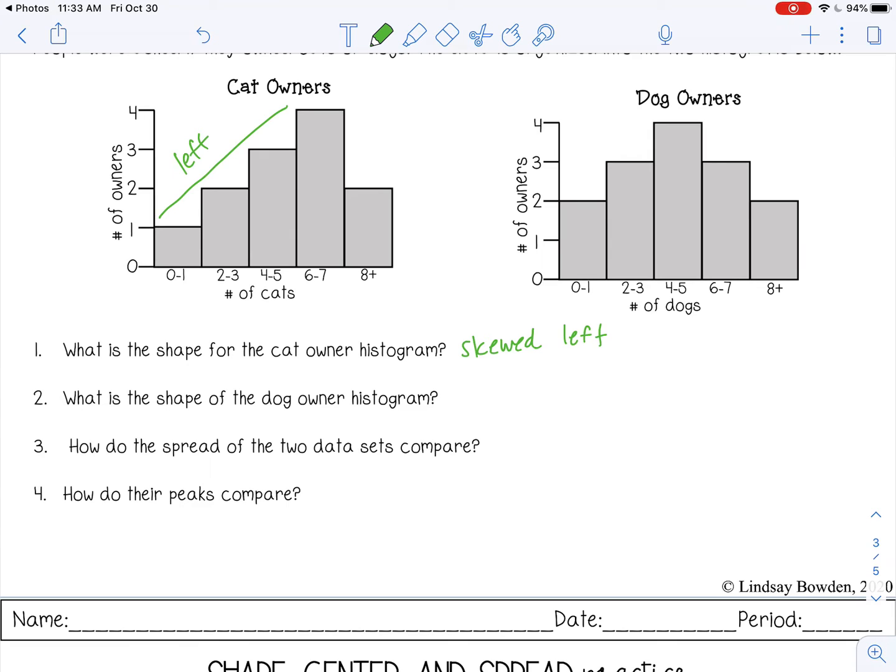What is the shape of the dog owner histogram? This one is pretty symmetrical. The peak is in the middle. So it's a symmetrical shape.